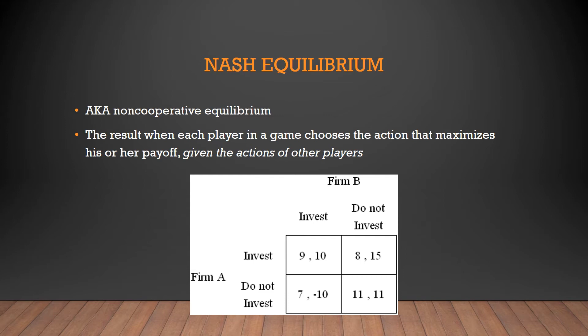With a dominant strategy, it didn't matter what the other player did — that was your best strategy regardless of which one they chose. Nash Equilibrium, however, is not that way. Nash Equilibrium is when a player chooses their best action based specifically on what the other player is going to do. So this one might be a little bit more involved to figure out.